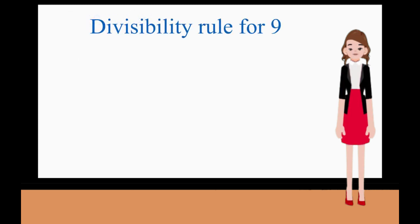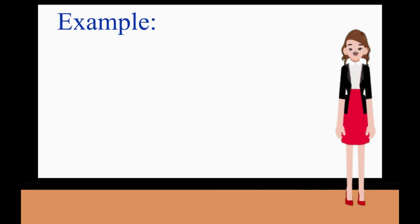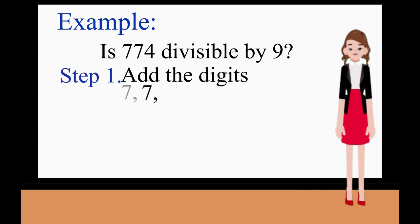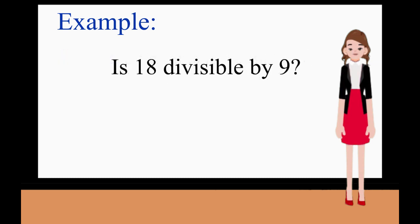Divisibility Rule for 9: A number is divisible by 9 when the sum of the digits is divisible by 9. For example: Is 774 divisible by 9? First step: we have to add the digits 7, 7, and 4. We add 7 plus 7 plus 4, which is equal to 18. Next step: determine if the sum of the digits is divisible by 9. Is 18 divisible by 9? Yes, because 18 divided by 9 is 2.